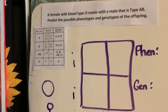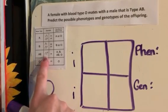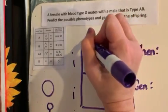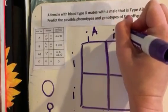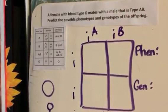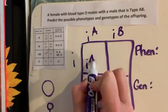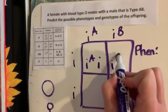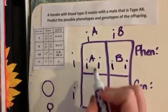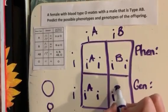The male is type AB. In order to be AB, using the chart, one allele must be A and the other must be B. Just like we did with all the other Punnett square videos, we start combining them. So this one here is going to be I-A-i, this one here is going to be I-B-i, this one down here I-A-i, and this one down here I-B-i.